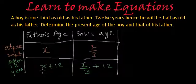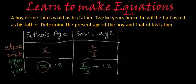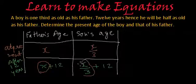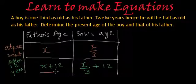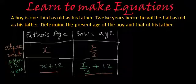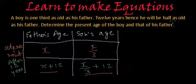These are their present ages — this is the present age of the father, and after 12 years, 12 will be added to this. This is the present age of the son, so after 12 years, 12 will be added to this. These are the ages of father and son after 12 years. What is the relation between them?